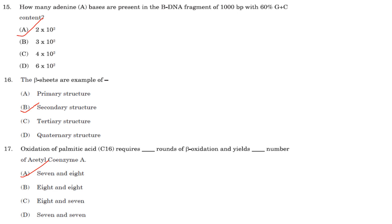How many adenine bases are present in a B-DNA fragment of 1000 base pairs with 60% G+C content? 60% of 1000 = 600, so G+C = 600 and A+T = 400. Therefore adenine = 200 and thymine = 200. Adenine bases = 2 × 10² = 200.